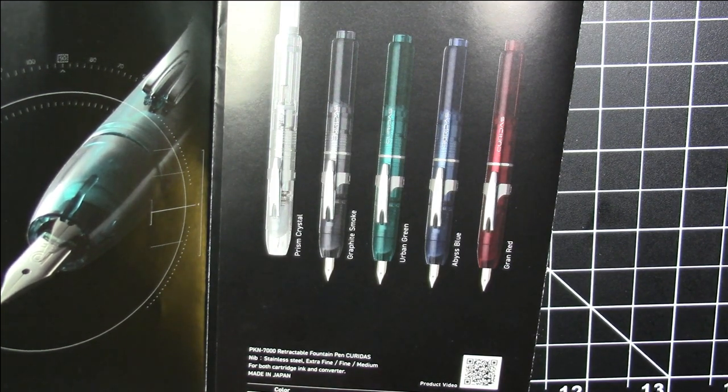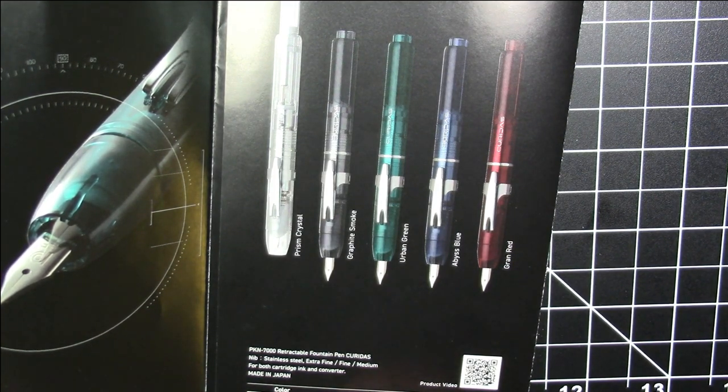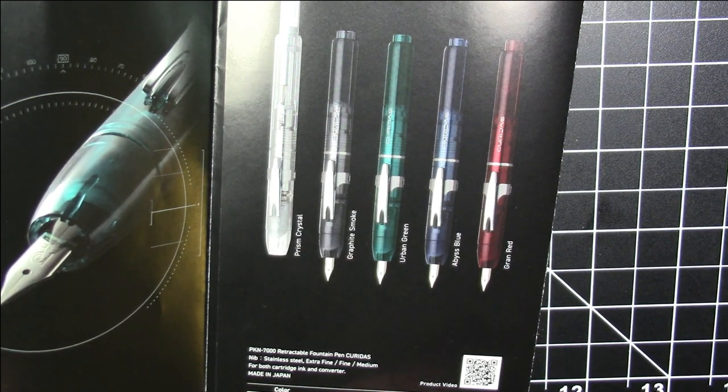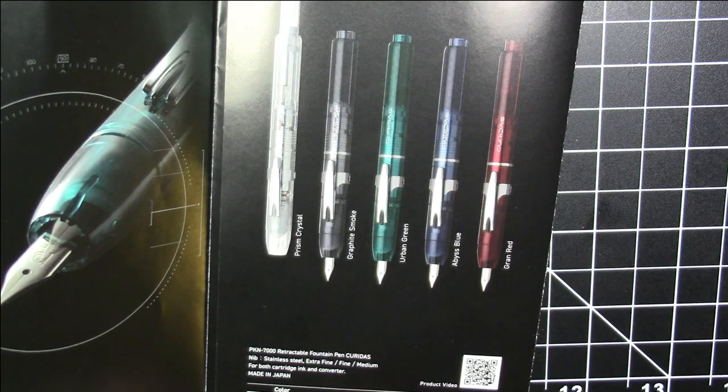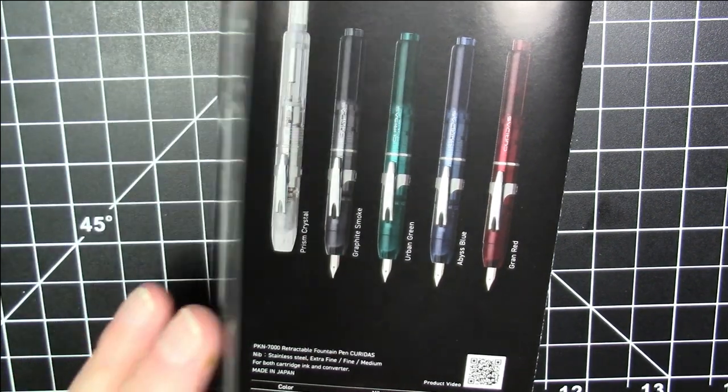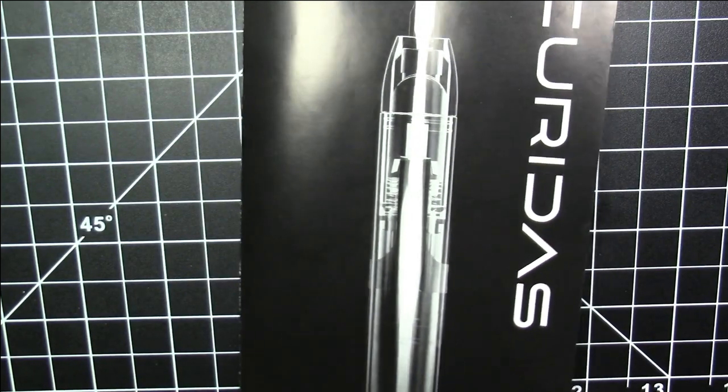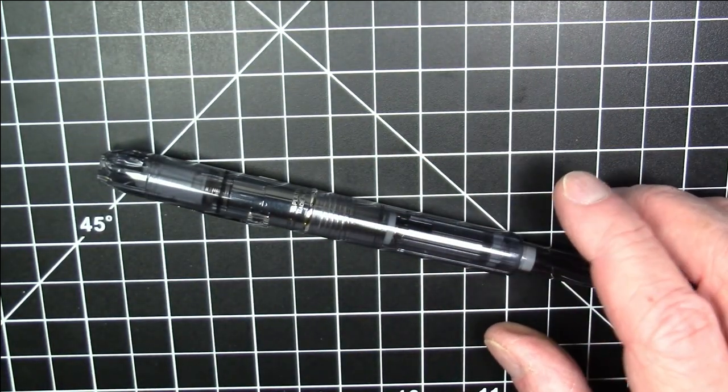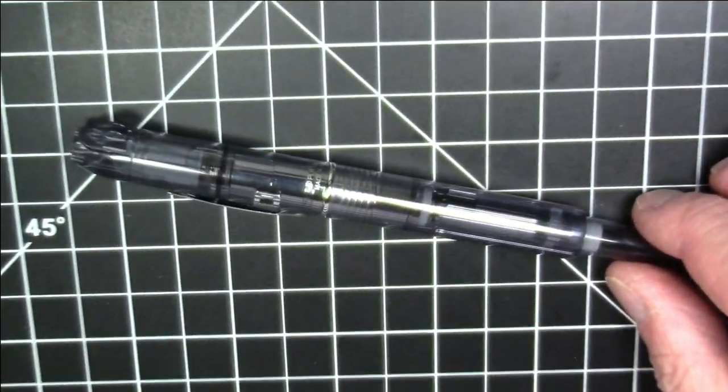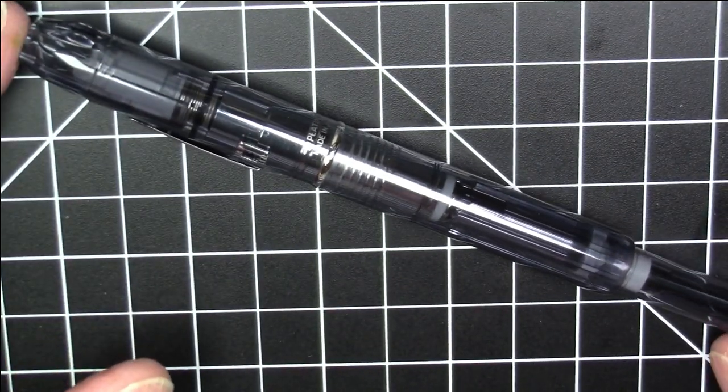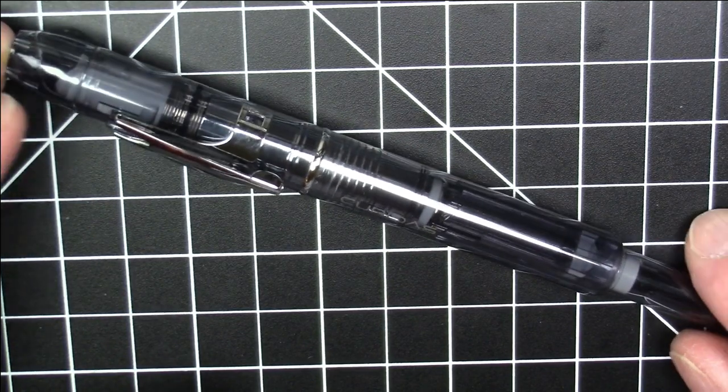So it was supposed to originally come out in early February. That was then pushed to late February, which was then pushed to mid-March, which was then pushed to mid-April. And that has finally arrived, and the pen is finally here. So without any further ado, this is the pen. This is the Platinum Curidas. This one is in the graphite finish, and it's in a medium nib.